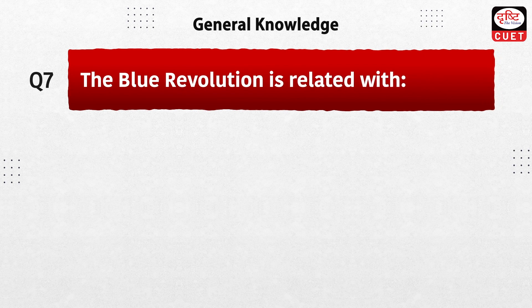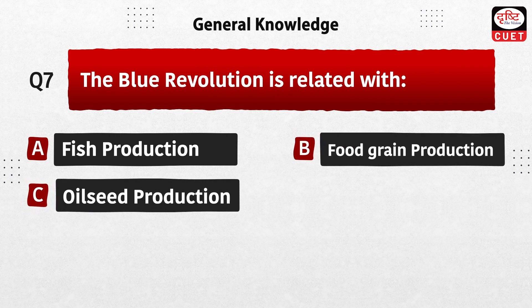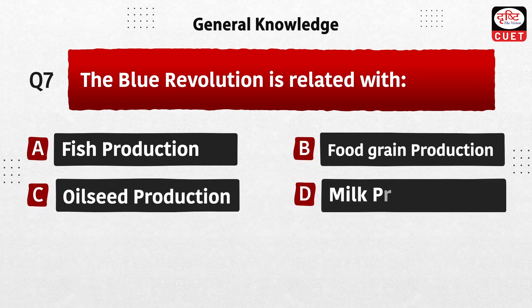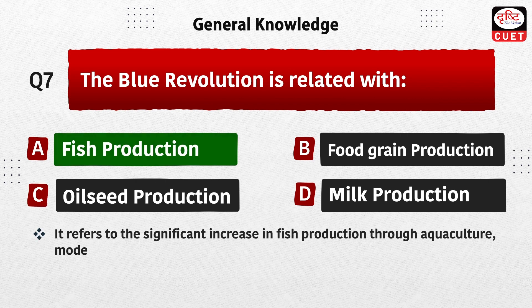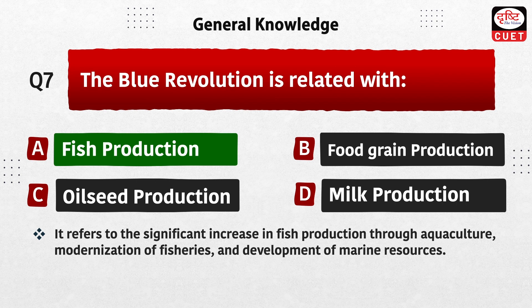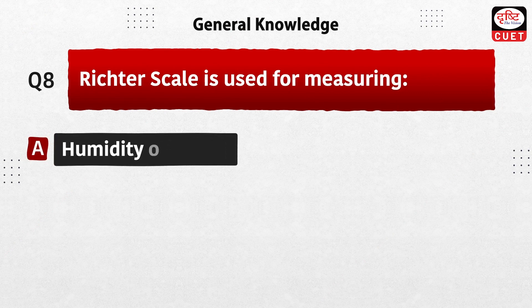Next question: the Blue Revolution is related with — fish production, food grain production, oil seed production, or milk production? The correct answer is option A, fish production. It refers to the significant increase in fish production through aquaculture, modernization of fisheries, and development of marine resources.